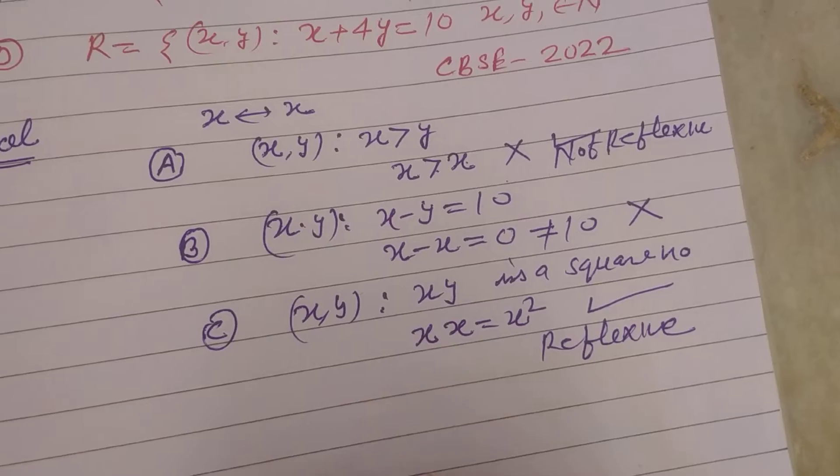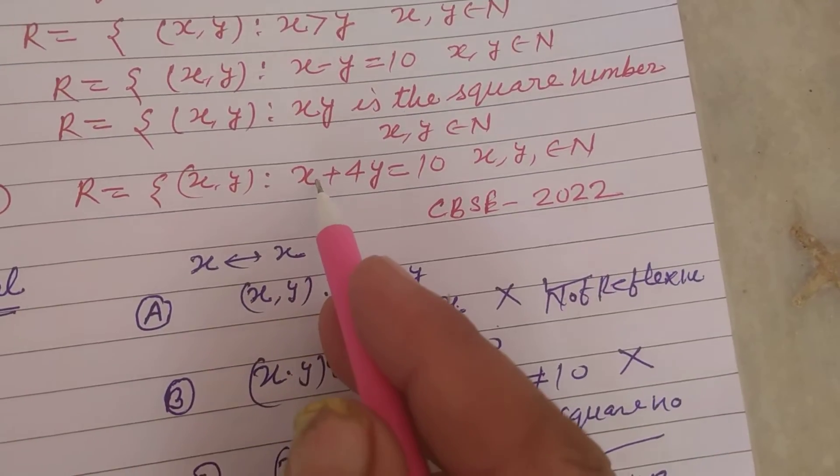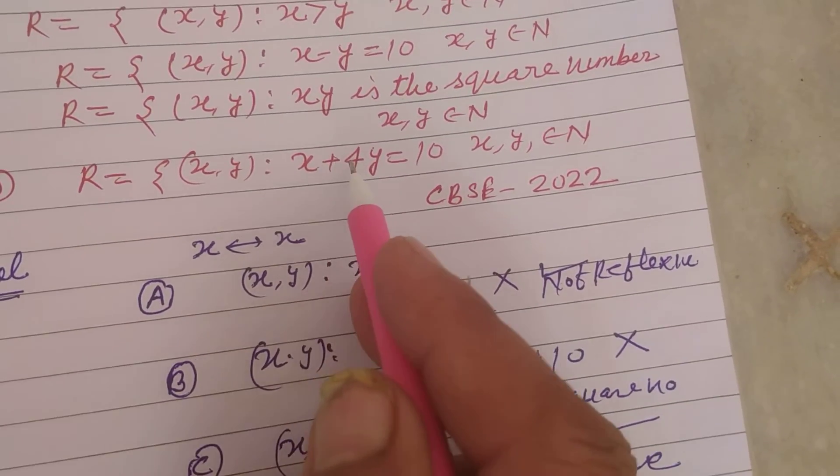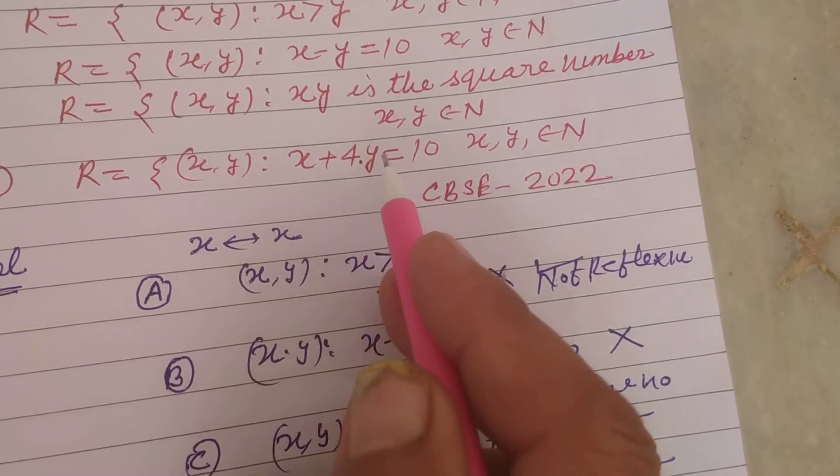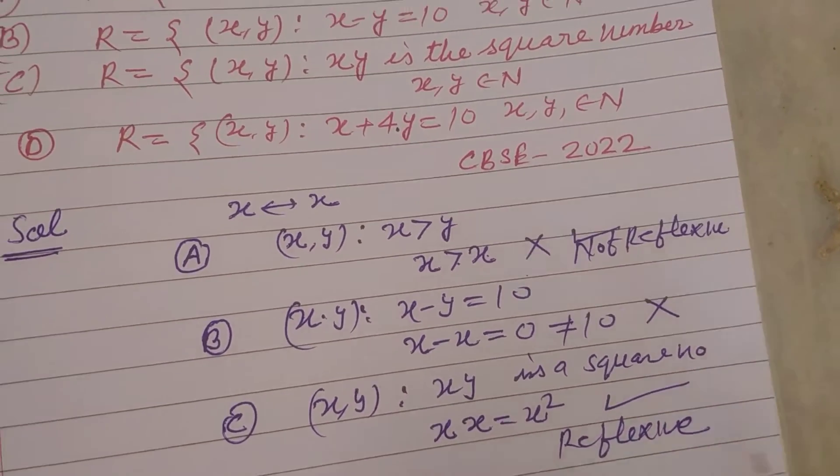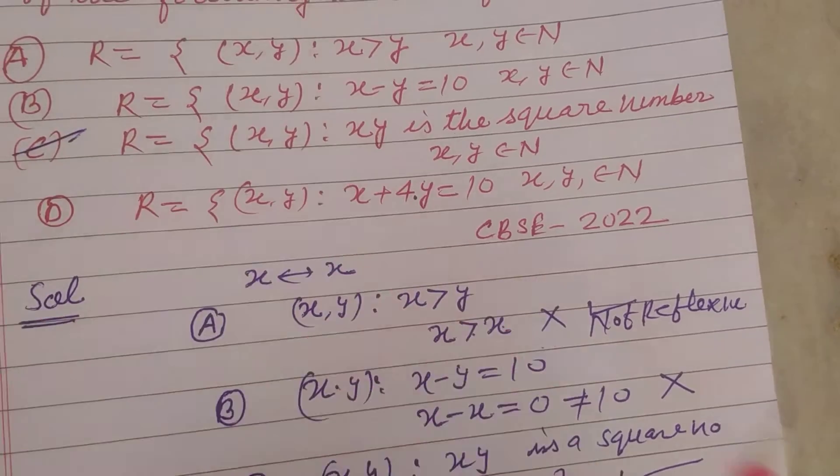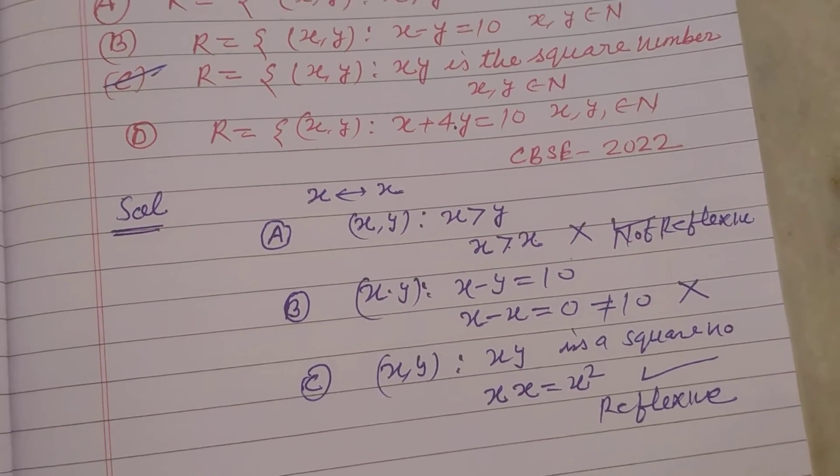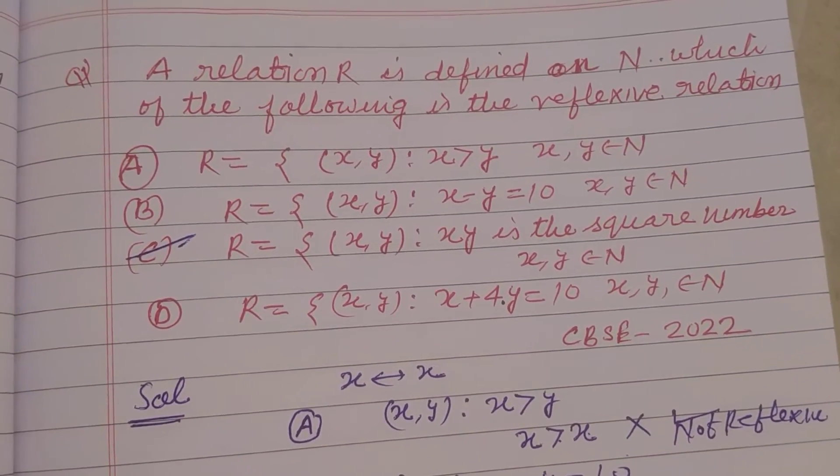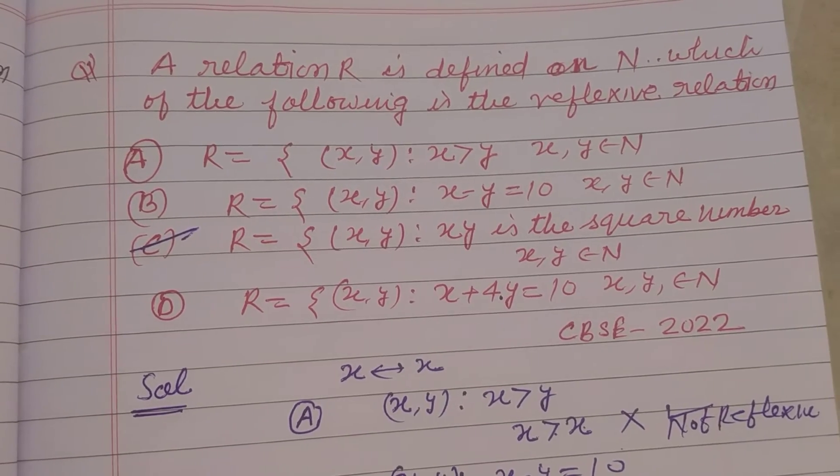And D, we are also not getting a reflexive relation. When we put x plus x for x plus 4x, we got 5x. So students, the answer to this question is C. I hope you got it. Please like the video, subscribe the channel. Thanks for watching.